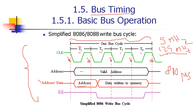During the second clock cycle T2 the processor activates read or write by placing the appropriate signal. At the beginning of T3 data is being written or read, and at T4 the pins begin to be deactivated. So it requires four clock cycles to read or write data to and from the microprocessor.